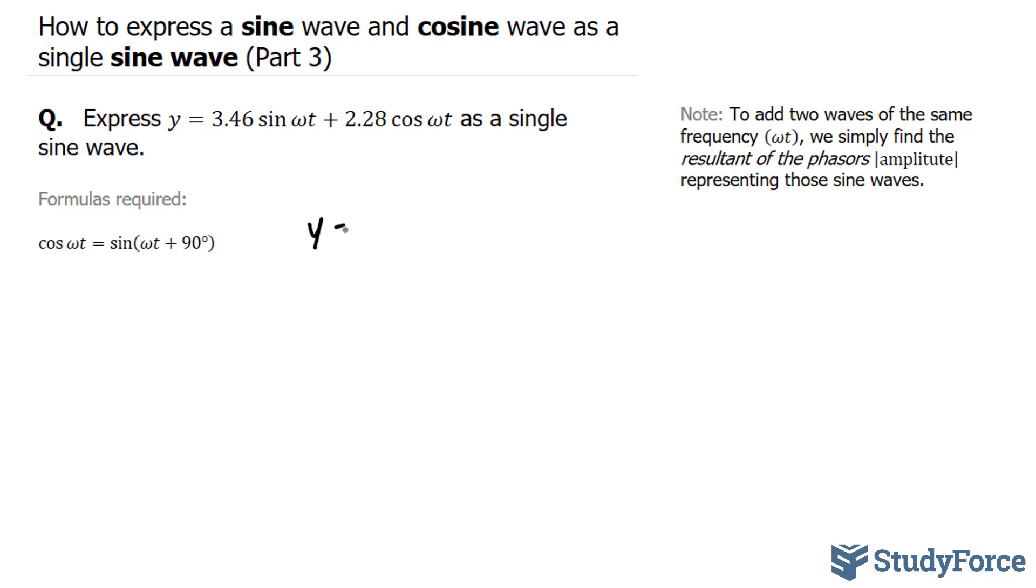We have y equals 3.46 sine omega t plus 2.28 sine omega t plus 90 degrees. To add two waves of the same frequency, these two terms have the same frequency omega t, we simply find the resultant of the amplitudes representing those sine waves.